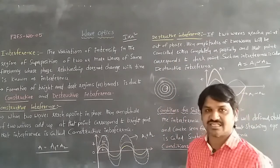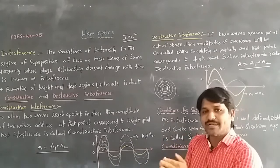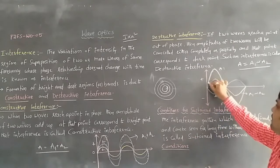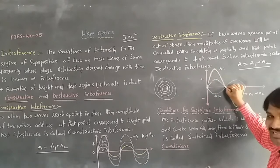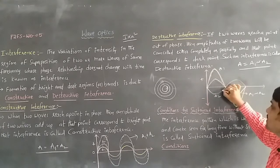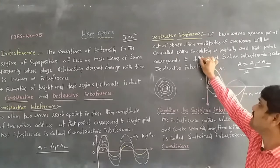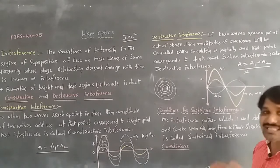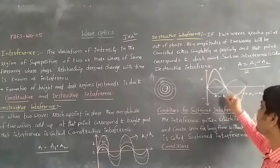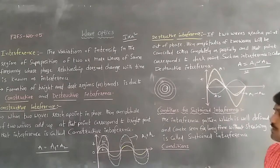Destructive interference means whenever two waves reach a point out of phase. The amplitudes of the two waves are cancelled — completely or partially. It corresponds to a dark point, meaning the intensity of light is less. The final resultant wave has less intensity, so A equals A1 minus A2. These are the basics of interference. Next we are going to know about sustained interference.